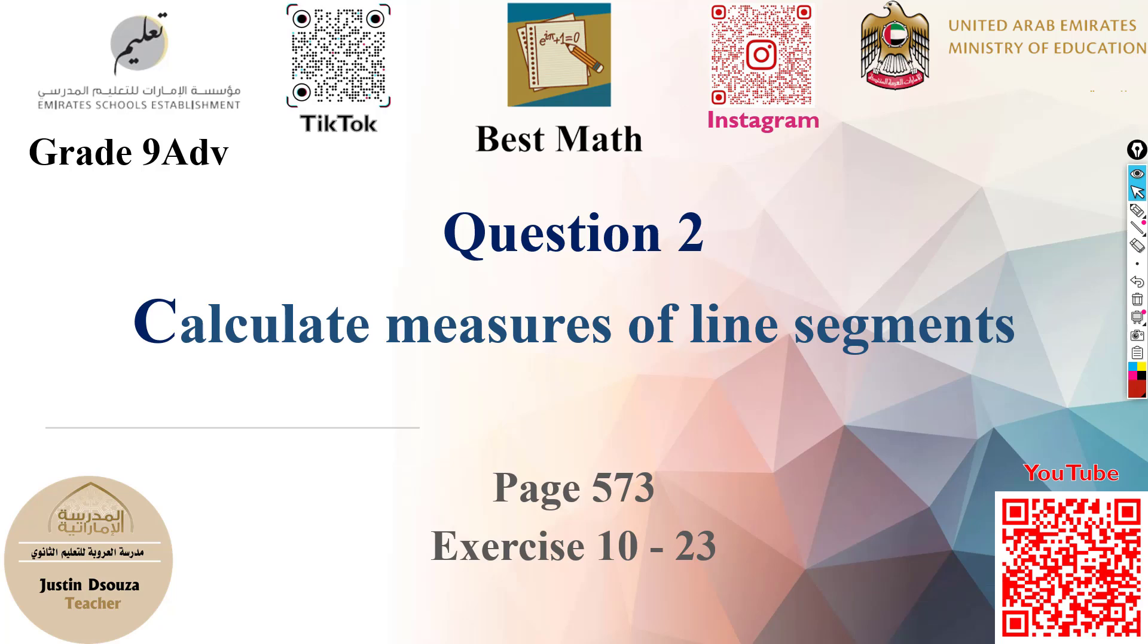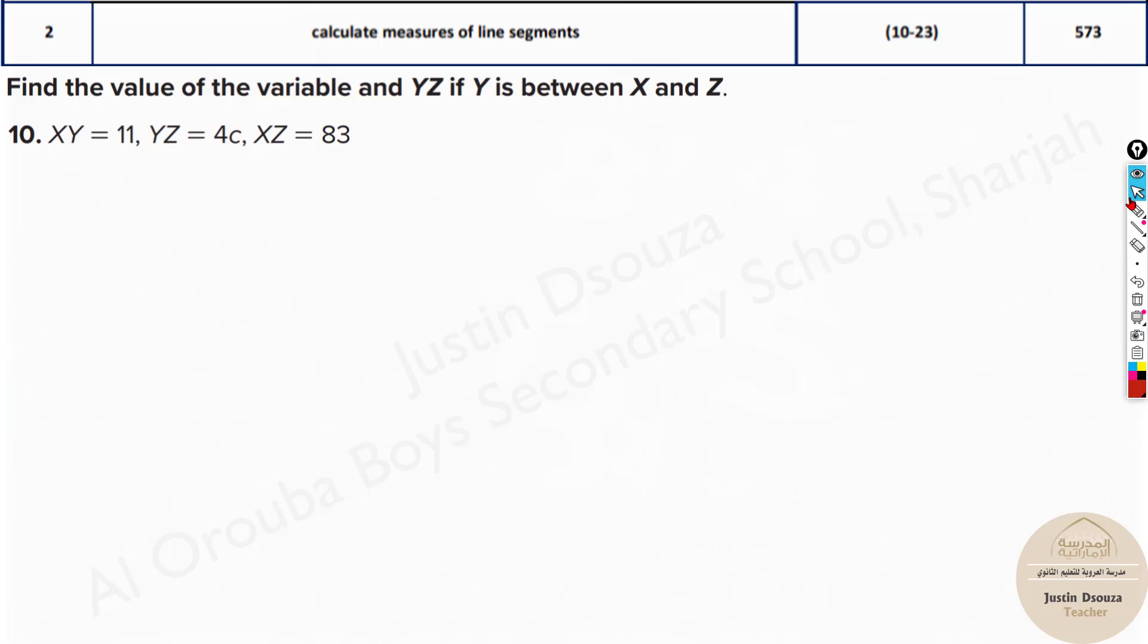The second question is to find the measure of line segments. It's another easy and simple topic. Here you have been told to find the value of the variable and YZ if Y is in between X and Z. That's a crooked line, but anyways, X and Z over here and Y is somewhere in between.